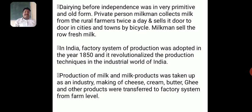From 1850, actual large-scale industrial operations started, which revolutionized the production technique in the industrial world of India. Production of milk and milk products was taken up as an industry — before 1850 it was not considered as such. The making of cheese, cream, butter, ghee, and other products was transferred from the farm level to the factory system, meaning production on a much larger scale.